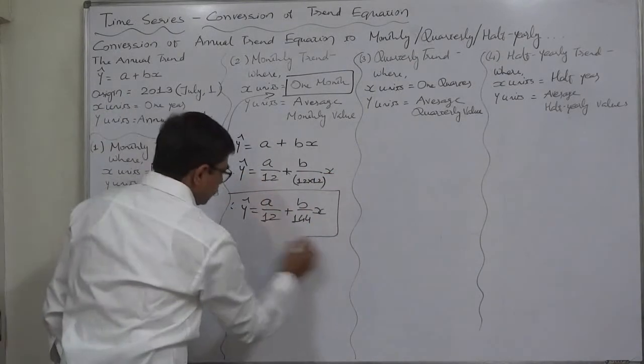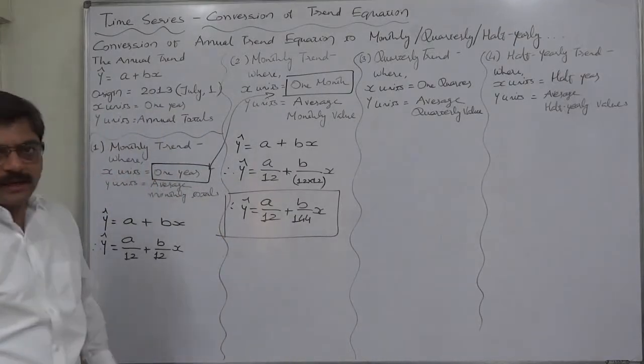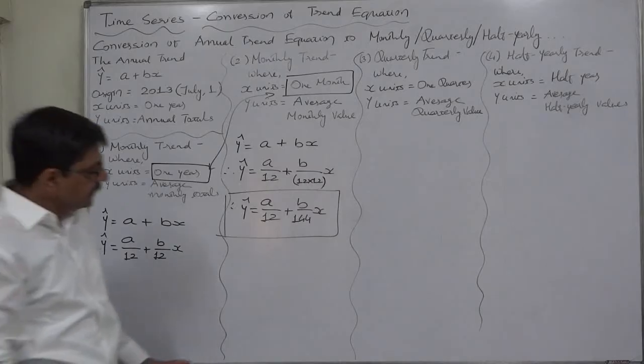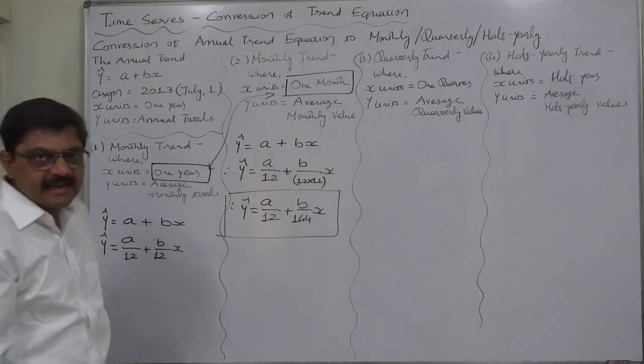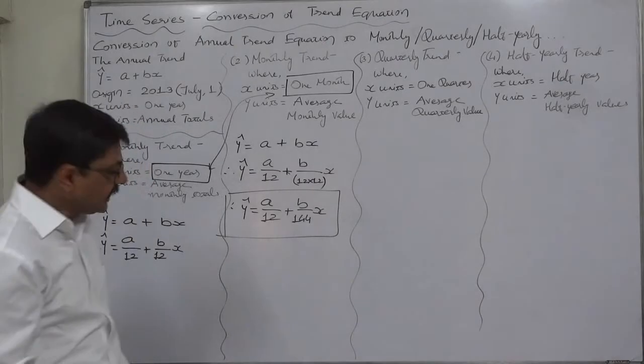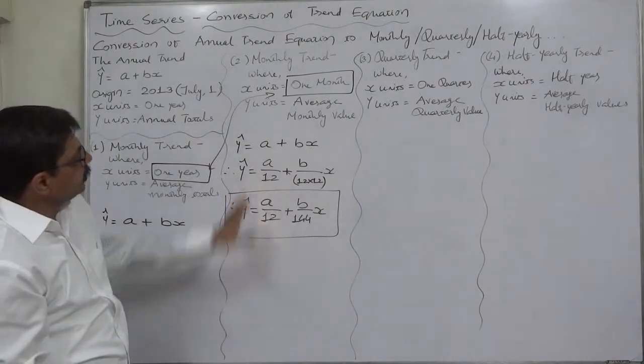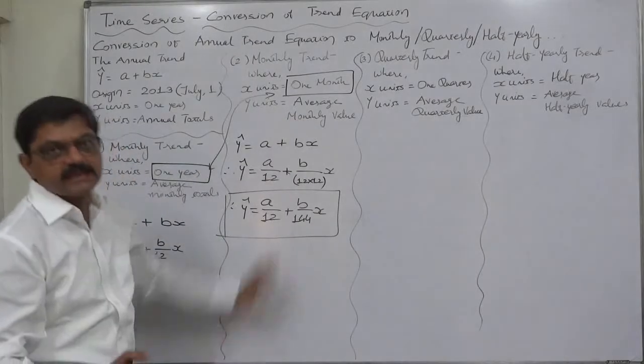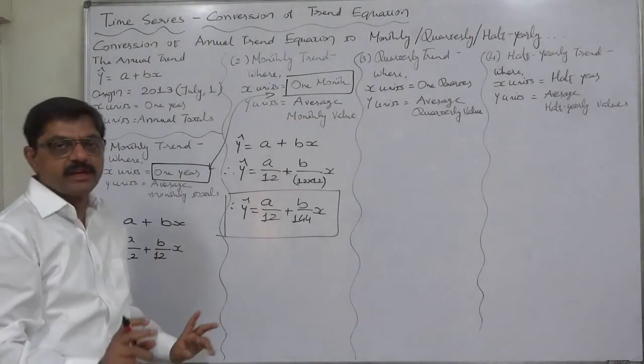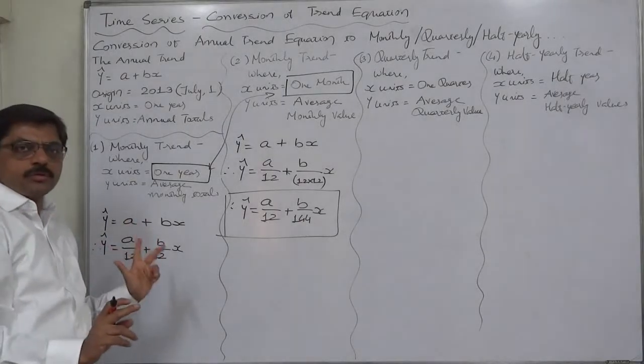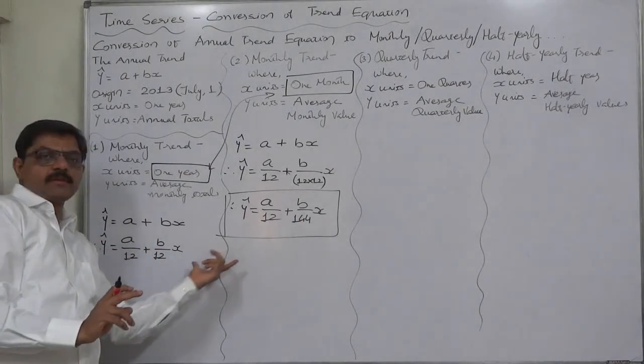This is the case. As a student, if in any examination it is asked to convert an annual trend into monthly trend, you should write this as your final answer. If there is no other specific information through which you can make distinction between these two, then you have to write this one, not this one.